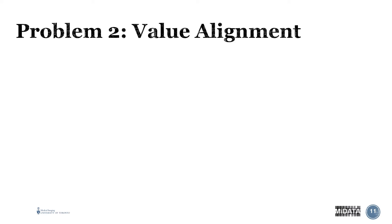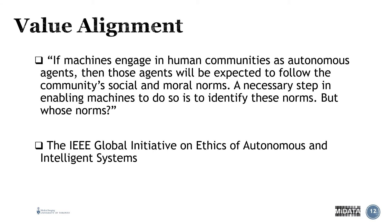Let's move on to value alignment. With machine learning and artificial intelligence, there's this idea that we're going to be developing autonomous entities or agents. If all of these agents will be operating in our society, why would we not expect those agents to abide by the same societal and moral norms that we do? That is where value alignment comes in.